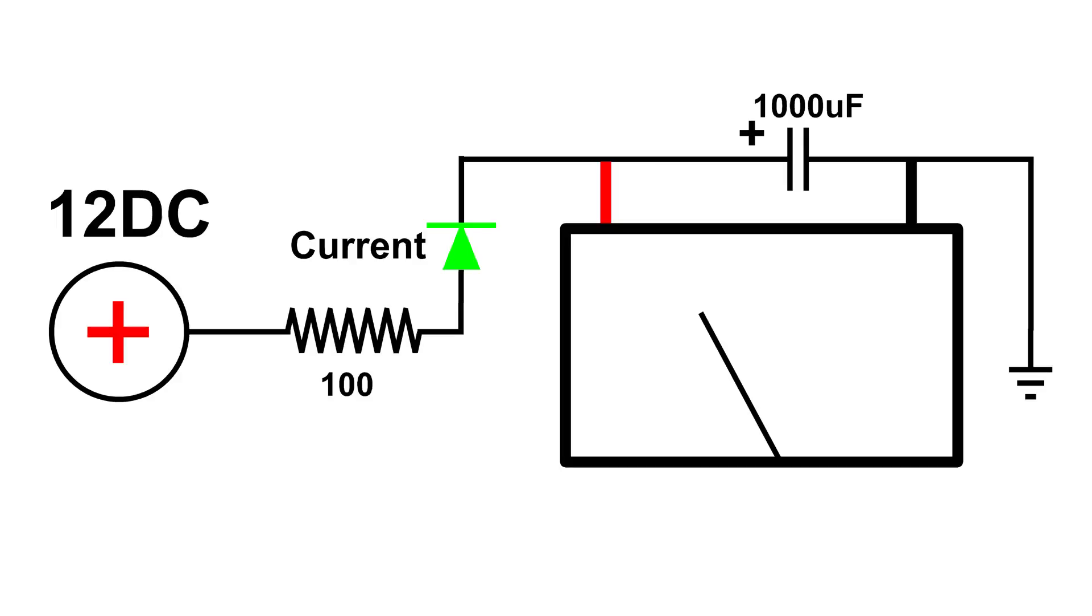we'll see the current diode get very bright and then dim, and then go out because we only have the capacitor in the circuit.